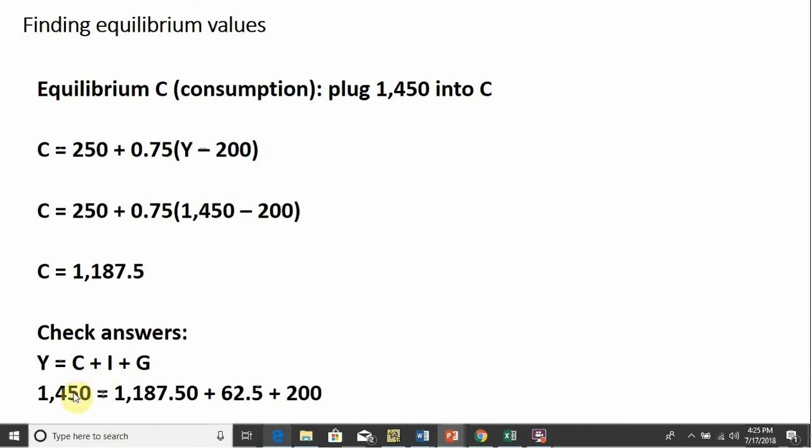And we can check our answer. We said Y was 1,450. And that should equal our values for C plus I plus G. And it does. So the left-hand side equals the right-hand side. So that is the end. I hope you found this video helpful.